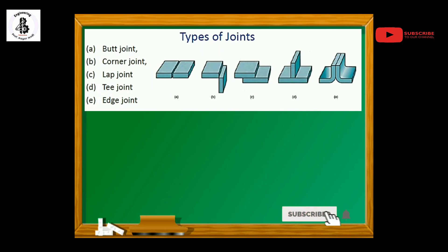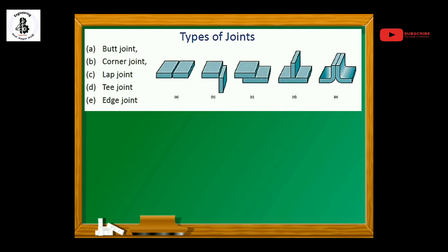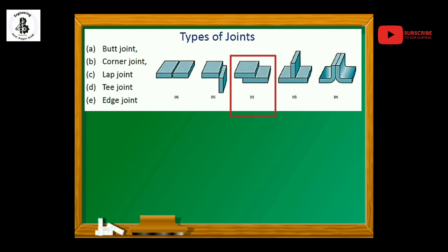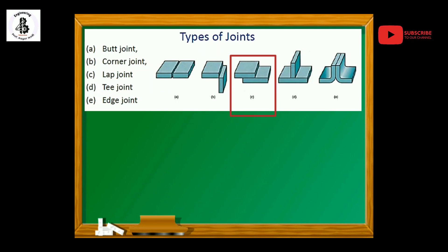As you can see in the figure, if one plate is resting on to another one and there will be joining as per requirements, that kind of joint will be known as a lap joint.